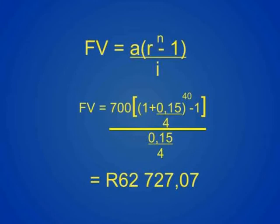Because each amount was earning interest, notice that we only put in 28,000 Rand over the 10-year period, but we got out 62,727 Rand. Annuities can be very powerful forms of investment, but it has to come over a very long period of time.